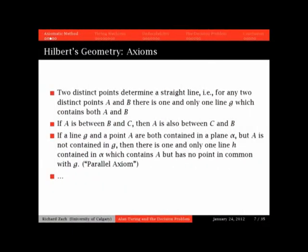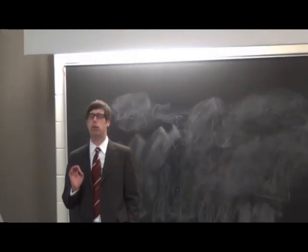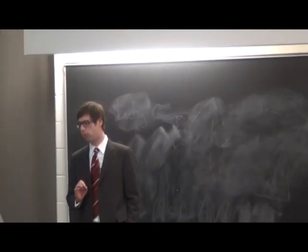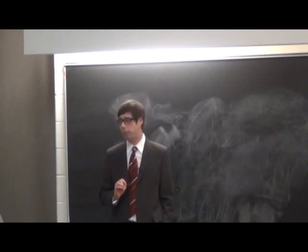And here are some examples of axioms. In total, there were 20 axioms in Hilbert's geometry. For instance, the first one says that whenever you have two distinct points, they determine a line, which means that, or the axiom precisely might read, for any two distinct points A and B, there's one, and only one, line that contains both of these points.